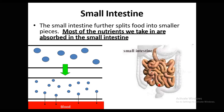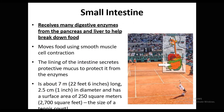Now, the small intestine: this place breaks the food into smaller pieces, and most of the nutrients we take are absorbed in the small intestine. Here is a picture showing how food particles — larger ones — are split into smaller parts in order to dissolve into the blood and be used by the body.